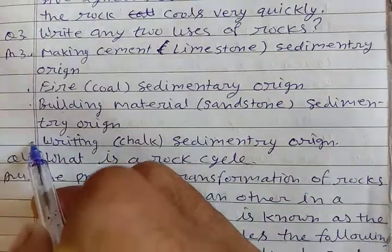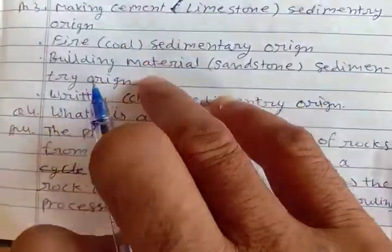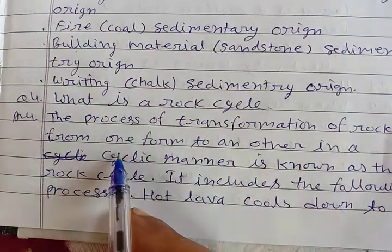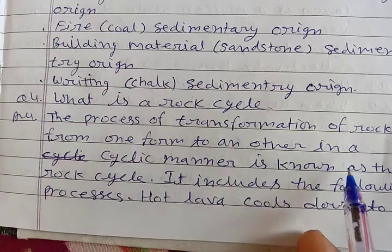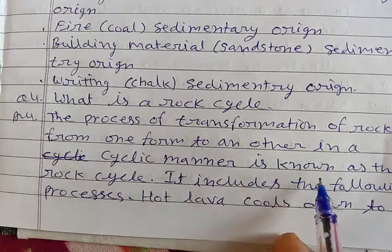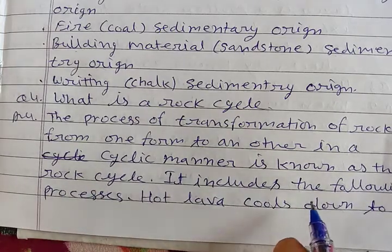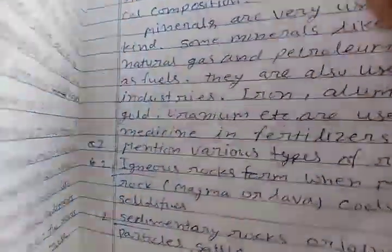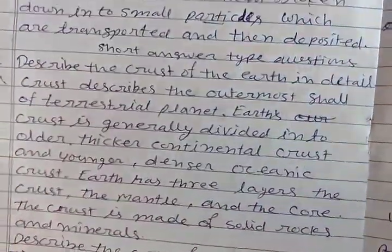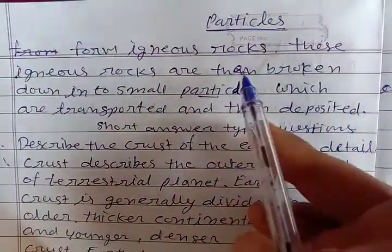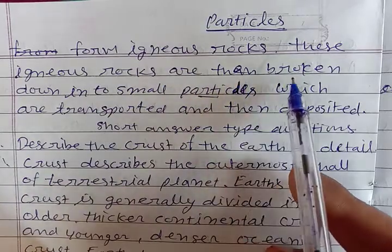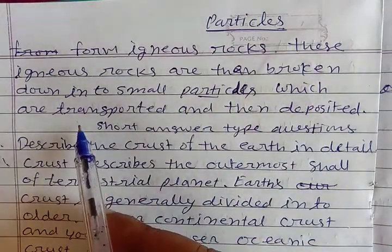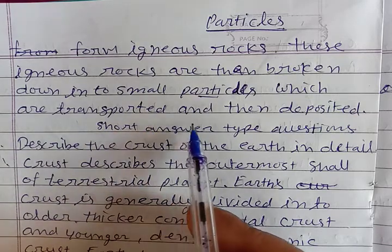In the following process, hot lava cools down to form igneous rocks. These igneous rocks are then broken down into small particles, which are transported and then deposited to eventually form sedimentary rocks.